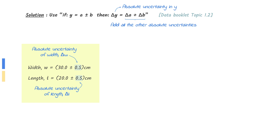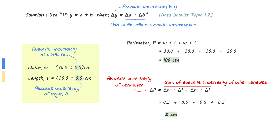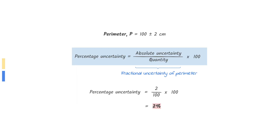Let's say that 30 centimeters is the width and 20 centimeters is the length. Both have an absolute uncertainty of 0.5 centimeters. The perimeter can be found by adding the width and length twice each. To find the absolute uncertainty of the perimeter, add the absolute uncertainty of length twice and the absolute uncertainty of width twice. Now that we know the perimeter and its absolute uncertainty, find the fractional uncertainty of the perimeter and multiply by 100 to find the percentage uncertainty.